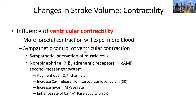Let's start with ventricular contractility, which is the force of contraction expelling blood from the ventricles. The parasympathetic system has no influence on the ventricular contractile cells — it only influences the SA nodal and AV nodal cells. So when we look at contractility, there is no parasympathetic influence, only the sympathetic system. The sympathetic system acts by way of norepinephrine, beta-1 receptors, and cyclic AMP through a second messenger system.